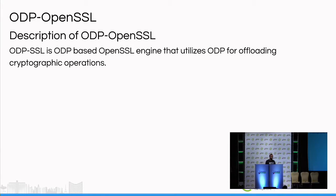OpenSSL, as you know, is a widely accepted crypto library. Generally, platforms use a crypto device engine for enhancing performance for OpenSSL. What we have done is create a new engine based on ODP so that platforms supporting ODP will be able to offload the OpenSSL API for crypto operations to the hardware directly without going to kernel space.